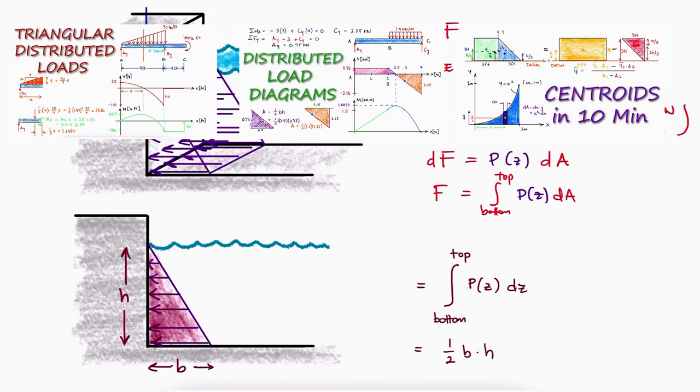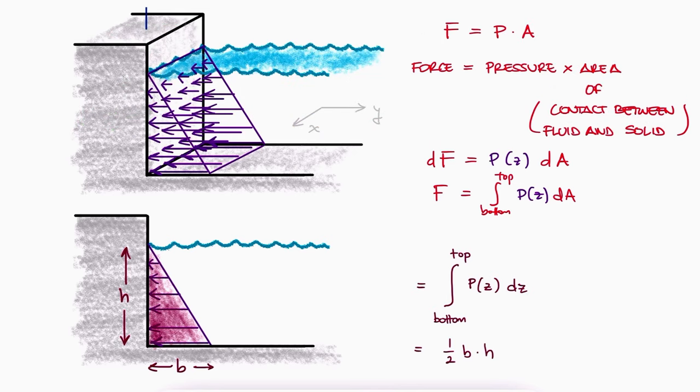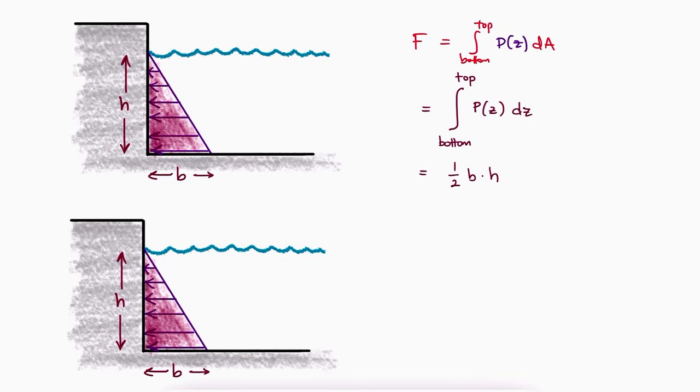Links below to those lectures and to the playlists for the entire courses. And just like with any triangular load, the location of the equivalent point load with that magnitude is the centroid of the triangle one-third from the base.